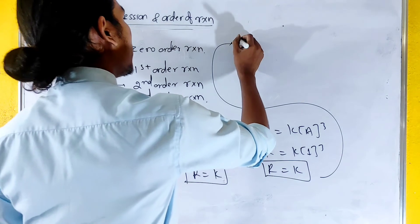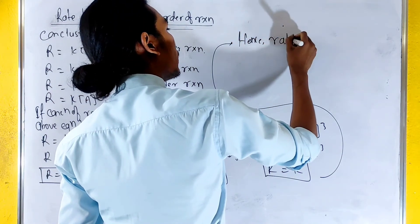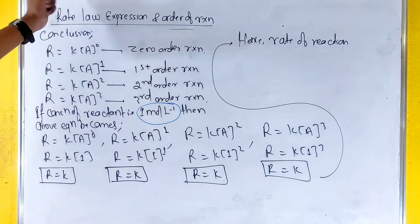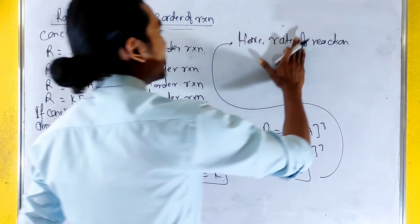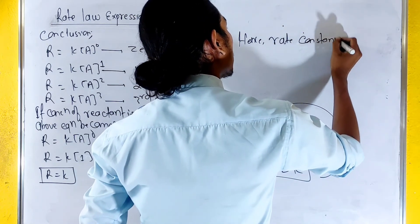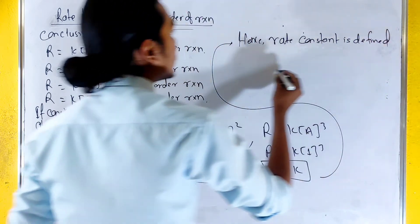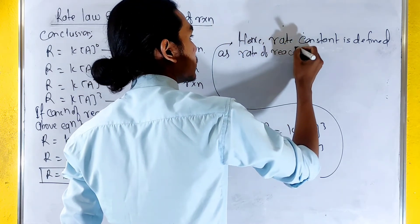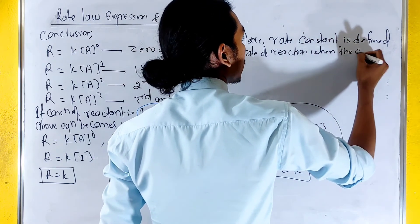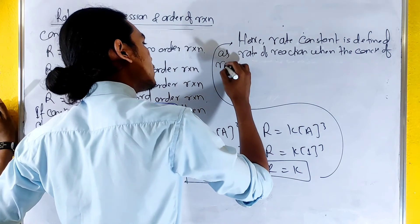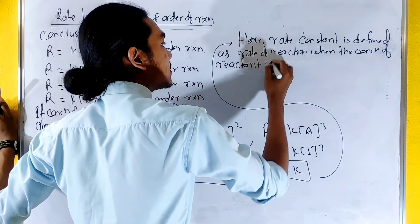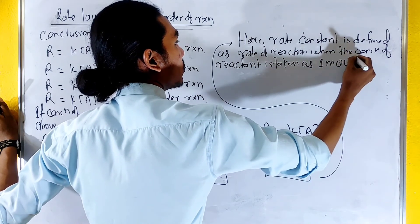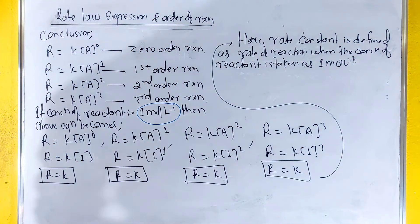Hence, rate constant is defined as the rate of reaction when the concentration of reactant is taken as one mole per liter.